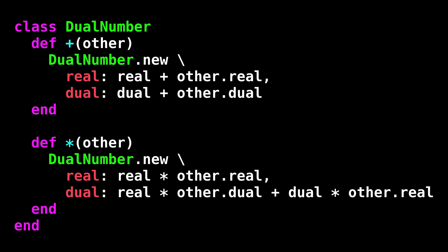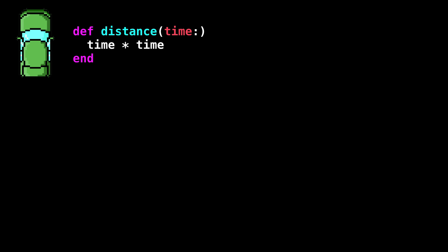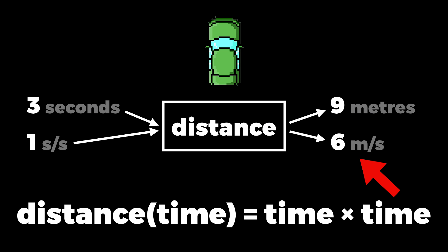We can use those results to implement plus and multiply on our dual number class. This is where the mathematics meets the programming. Now, if I have two dual numbers, I can add them and multiply them. So for the green car, where the distance is time multiplied by time, we can take that three seconds, changing at one second per second, ask for the distance, and get the result nine meters, changing at six meters per second. And that's the answer we wanted. It just works.